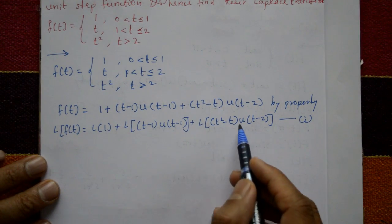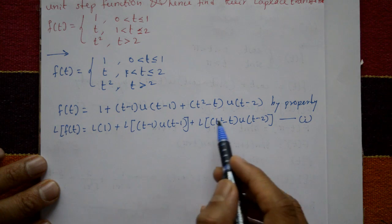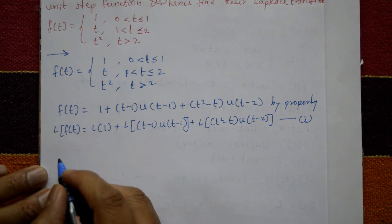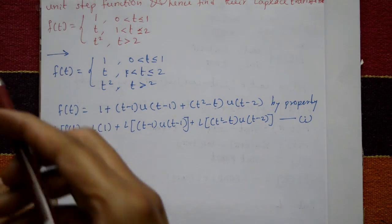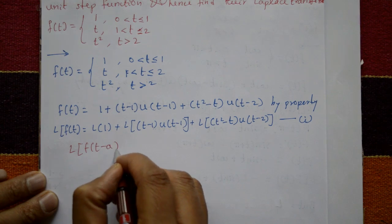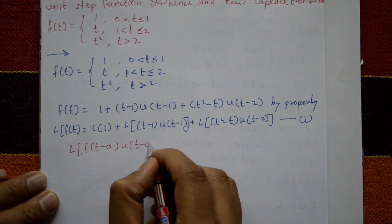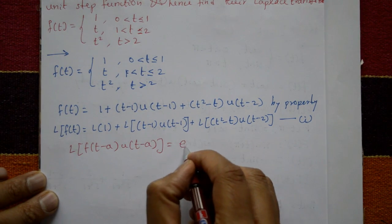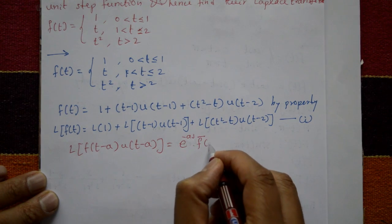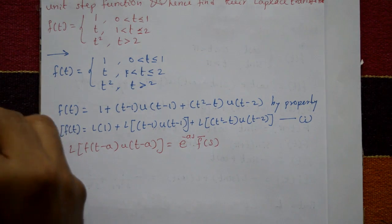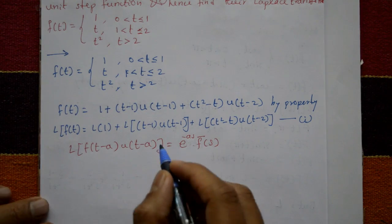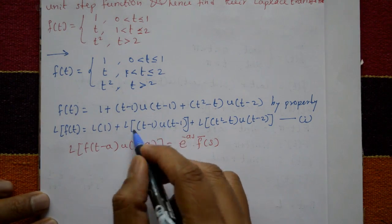Using the second shifting property for these two terms: L{f(t − a)·u(t − a)} = e^(−as)·F̄(s). We will now apply this property to each of the two remaining terms.